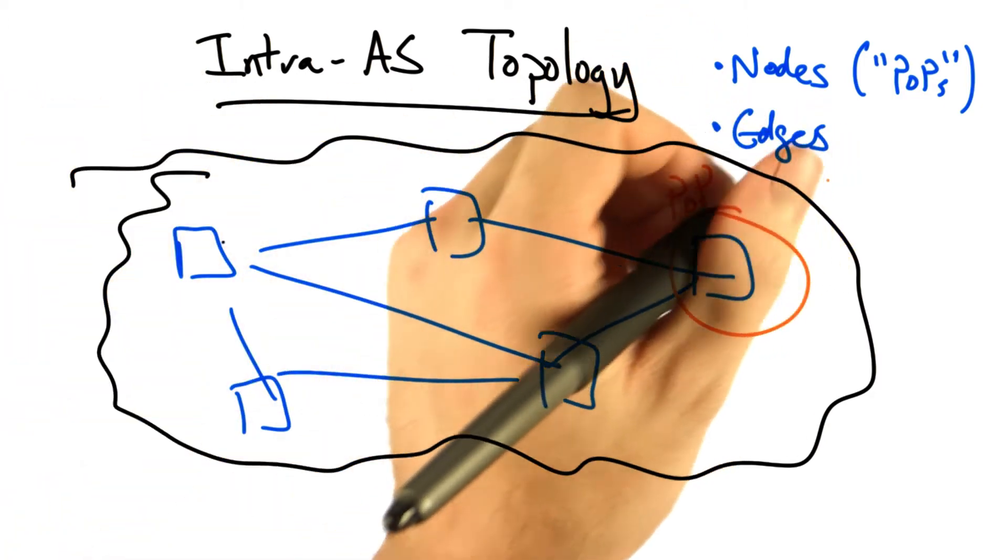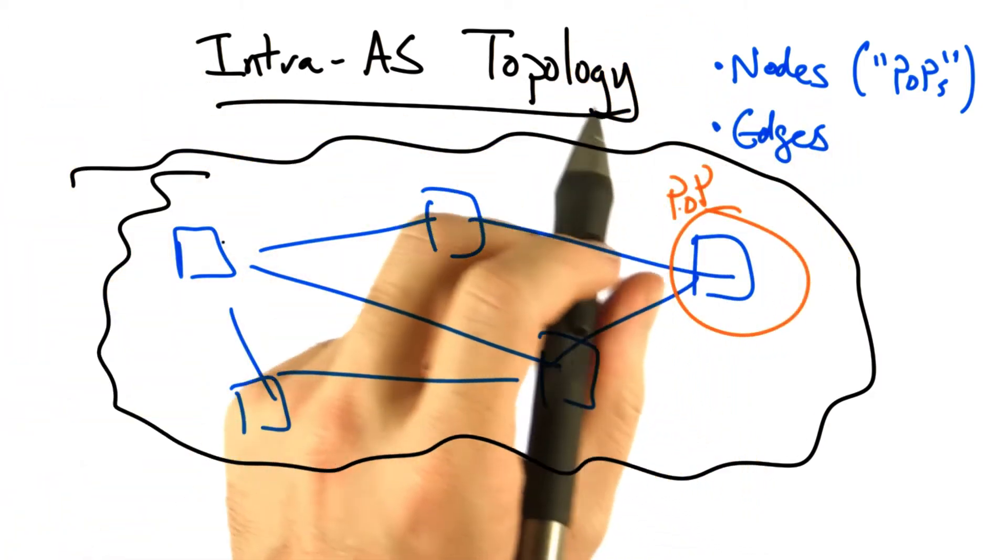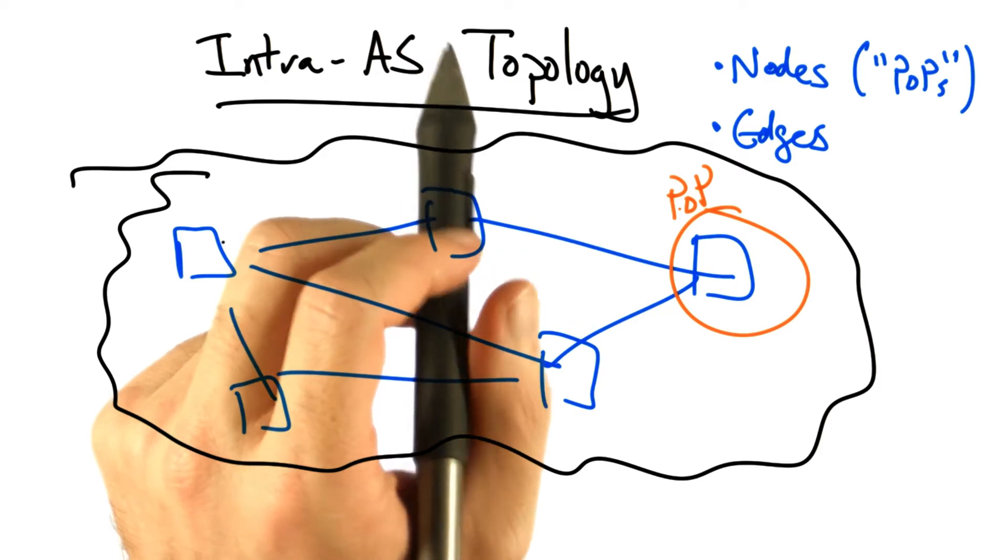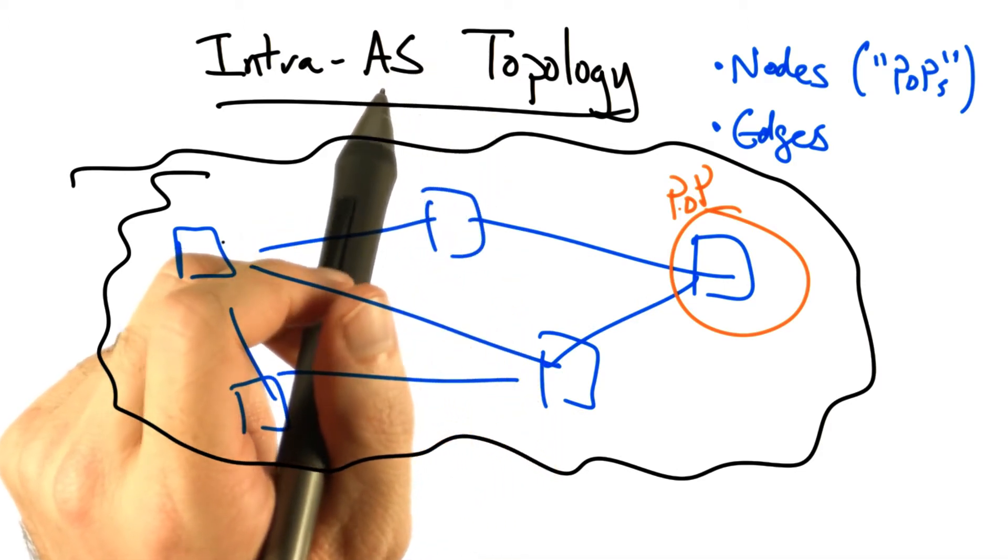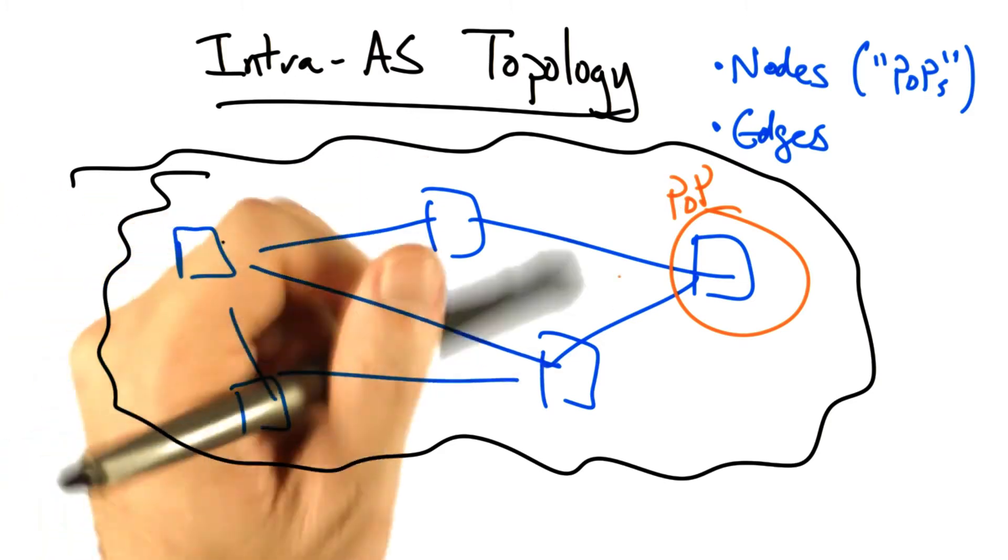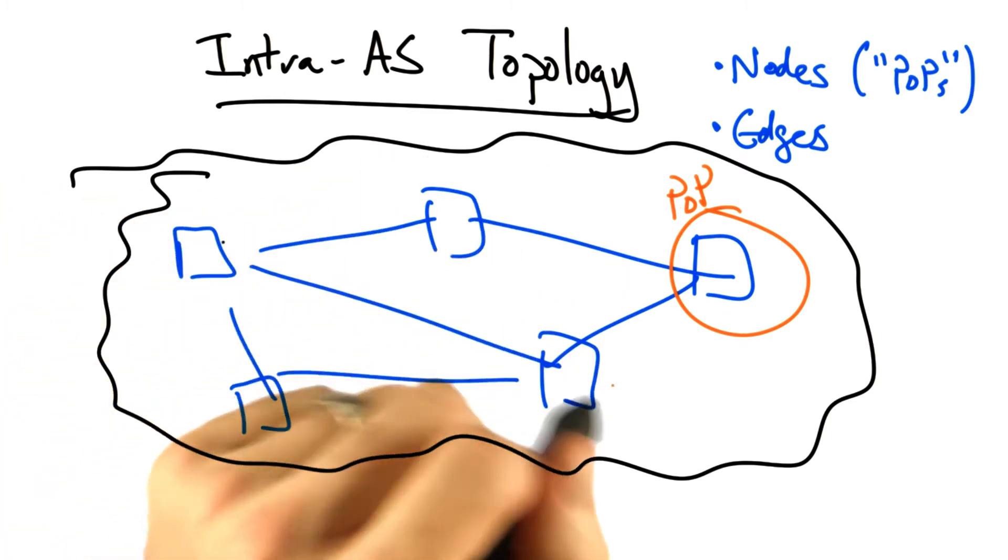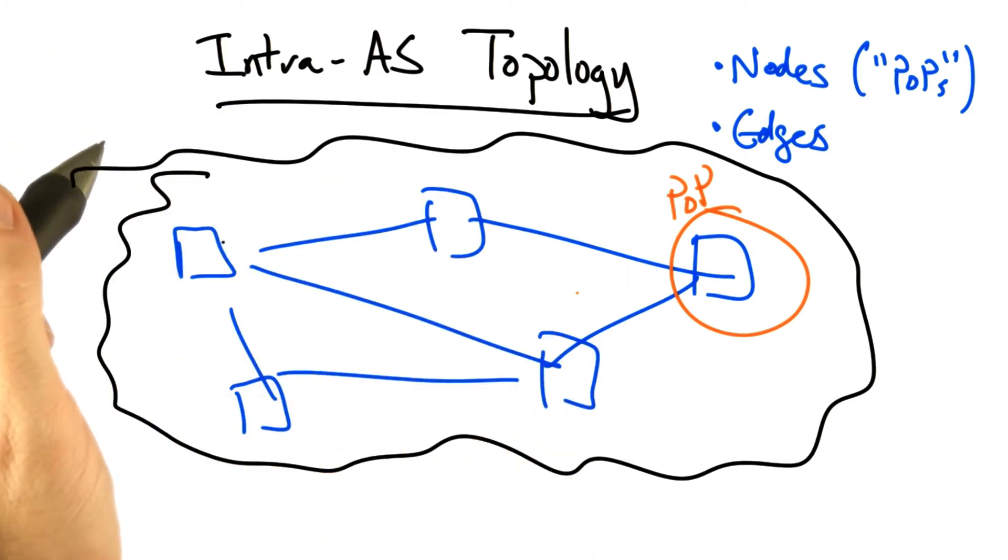A POP is typically located in a dense population center so that it can be close to the POPs of other providers for easier interconnection, and also close to other customers for cheaper backhaul to customers that may be purchasing connectivity from this particular AS.